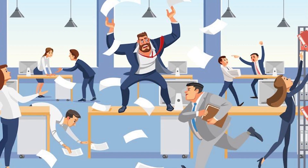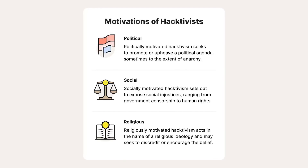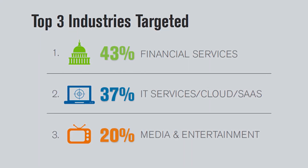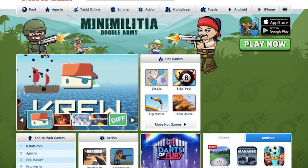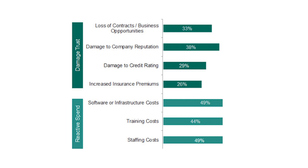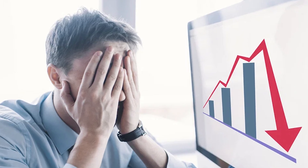But why would someone do this? What's the motive behind a DDoS attack? Well, it could be anything from criminals seeking chaos for the sake of chaos, to more sinister motives like extortion, revenge, or even political reasons. In recent years, we've seen DDoS attacks hitting major websites, online gaming platforms, and even critical infrastructure. The impact can range from simple inconvenience to causing significant financial losses for businesses.